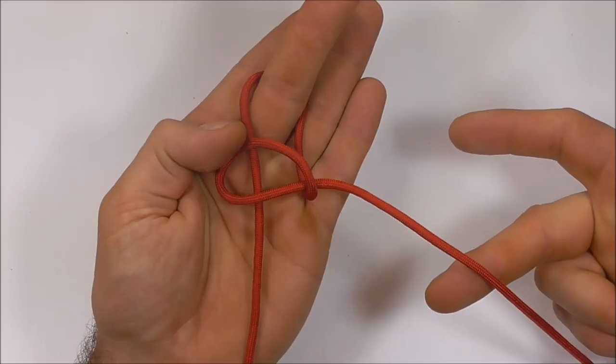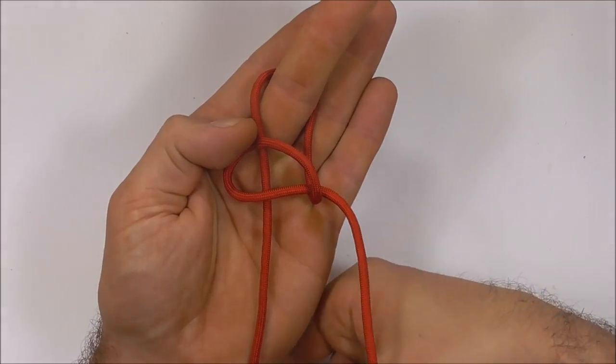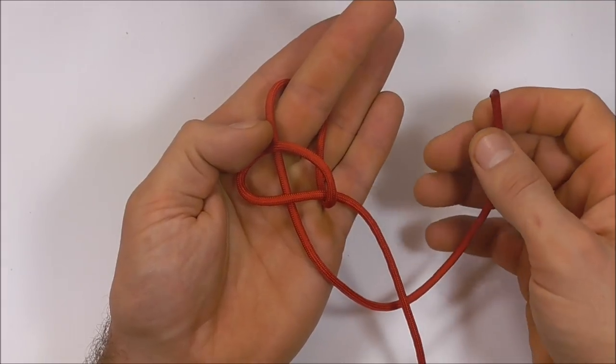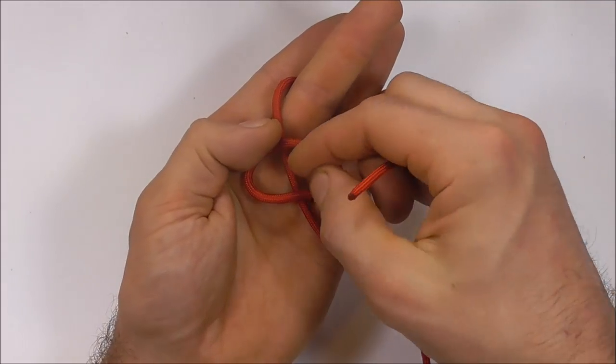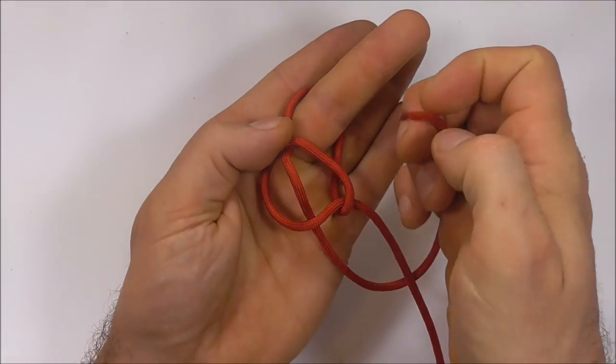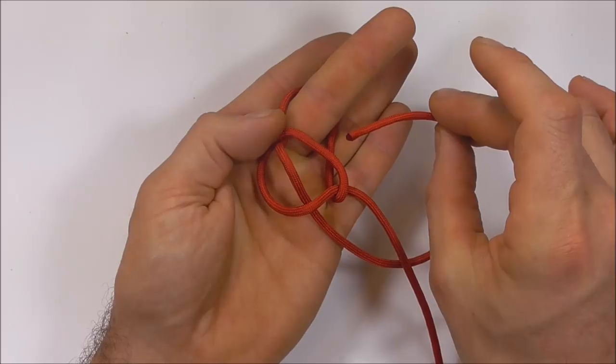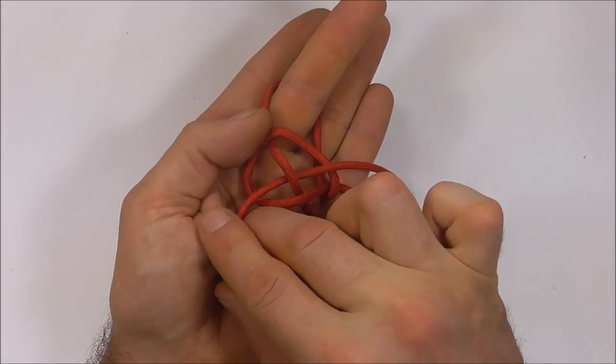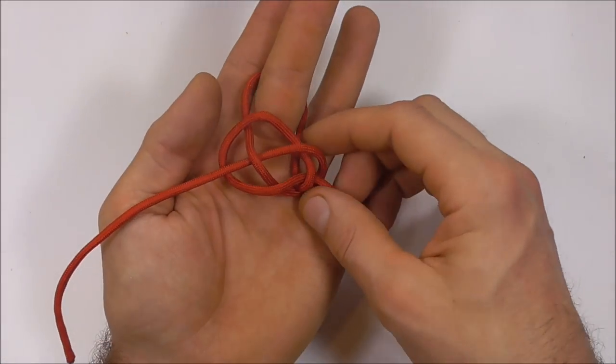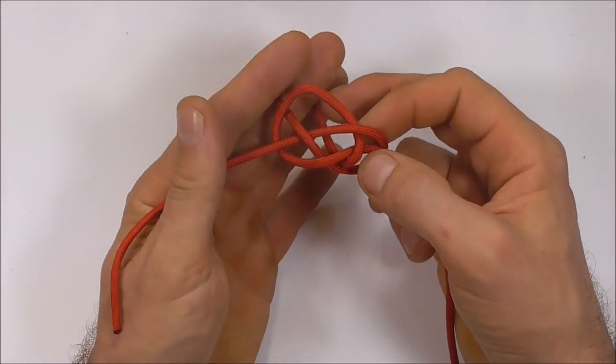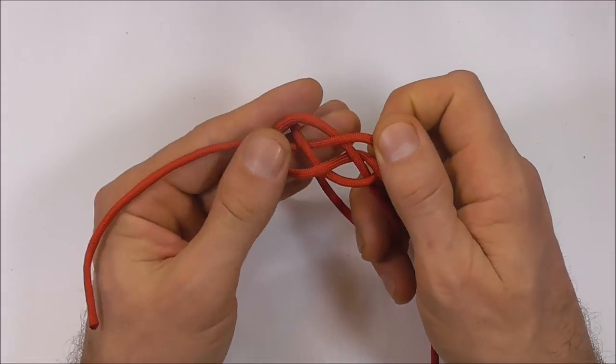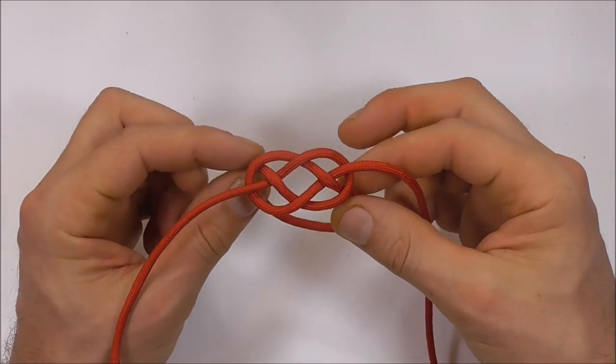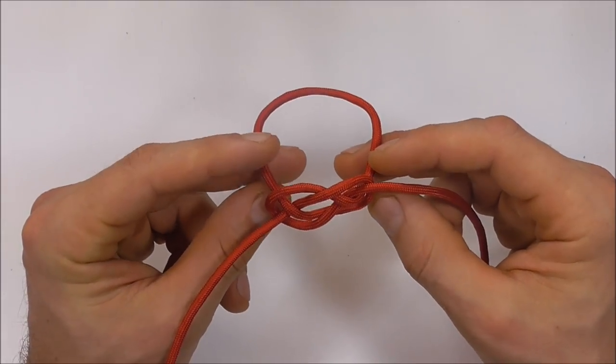Then reach underneath this right hand strand, grab the left, then we want to feed this working end straight through the center. So I'm going to lift this center portion up and weave this straight through. You should end up with something that looks like this and there should be the loop over the other side.